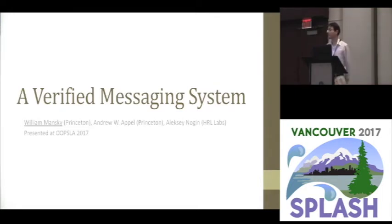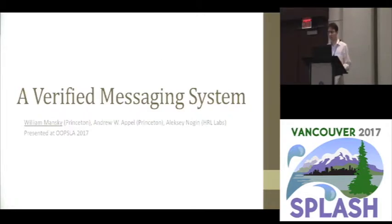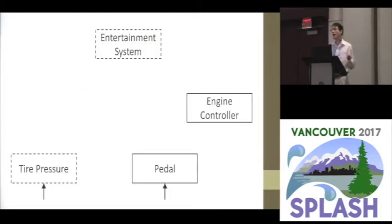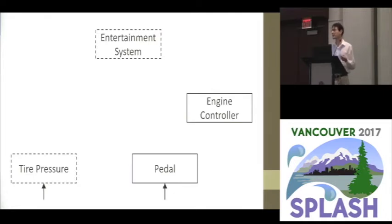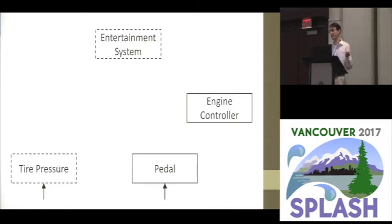I've been working with Andrew Appel at Princeton and Alexi Nogin at HRL Labs on verifying some software used in automated vehicles. In an automated vehicle, we may have some collection of sensor systems, like the tire pressure gauge and the pedal, and some set of control systems, like the entertainment system and the engine controller, and we need the control systems to constantly get up-to-date values from the sensors.